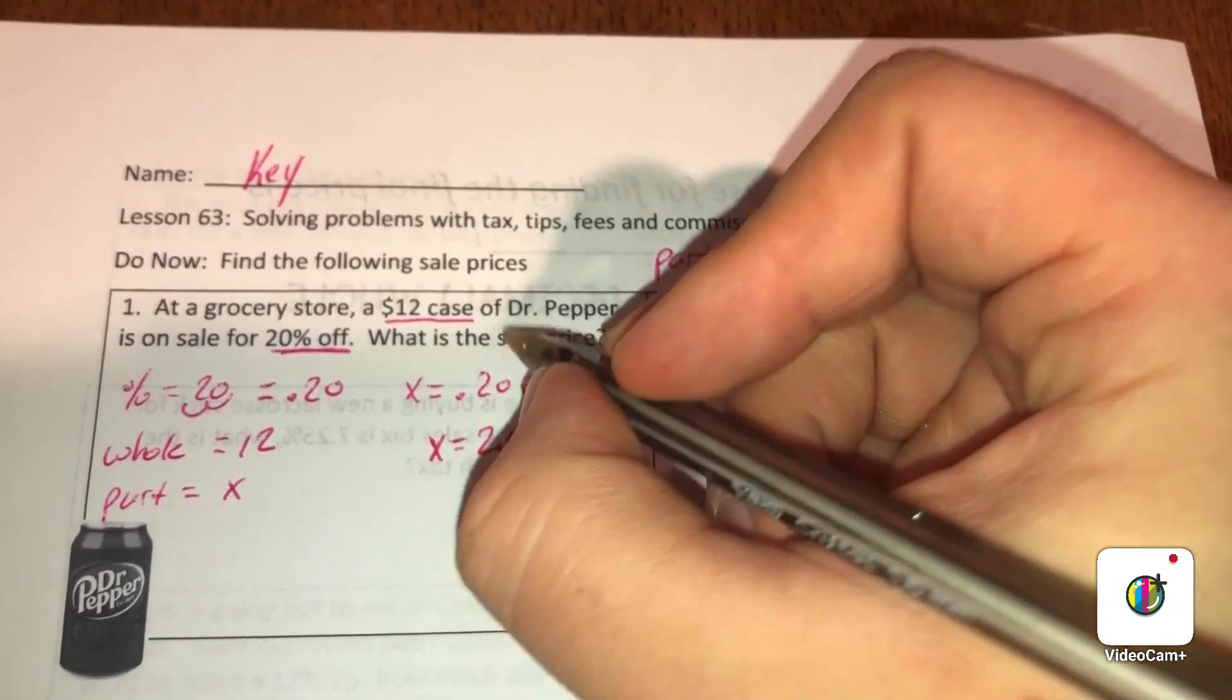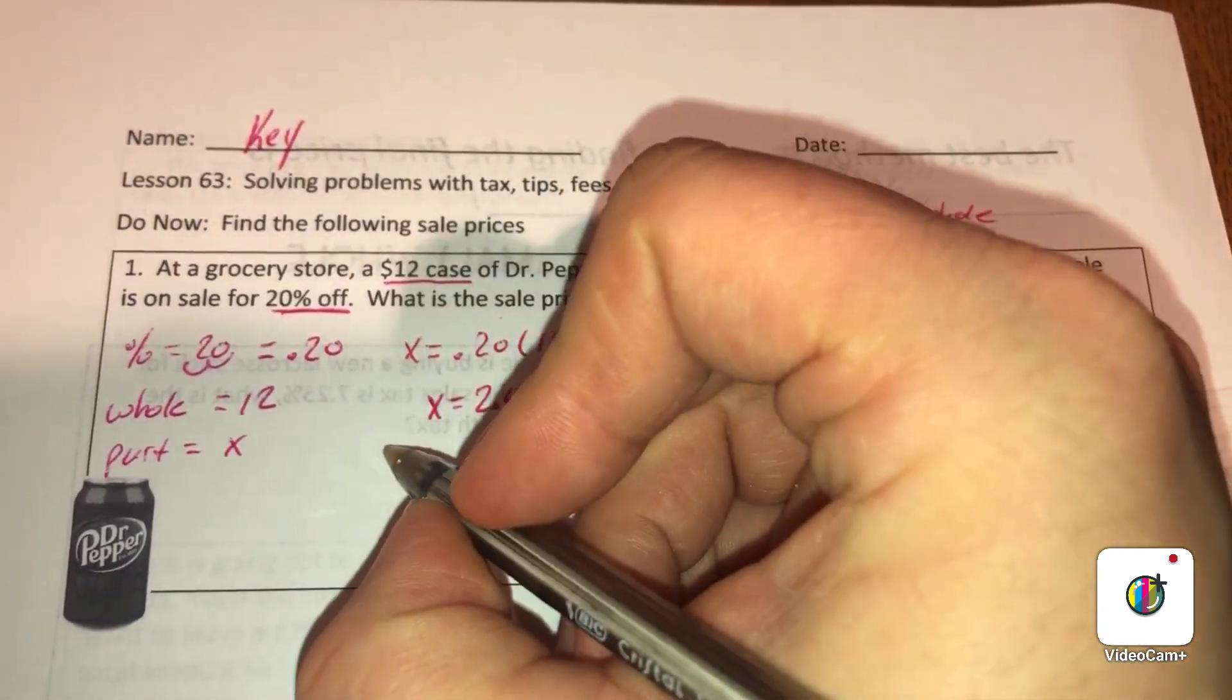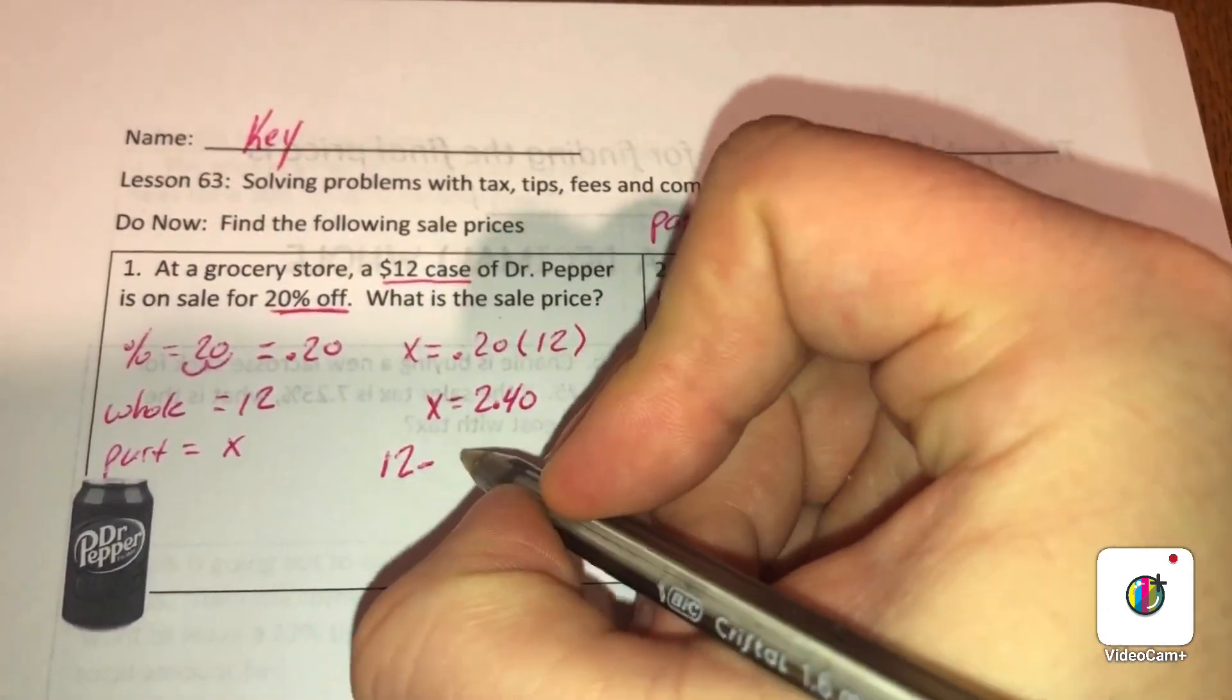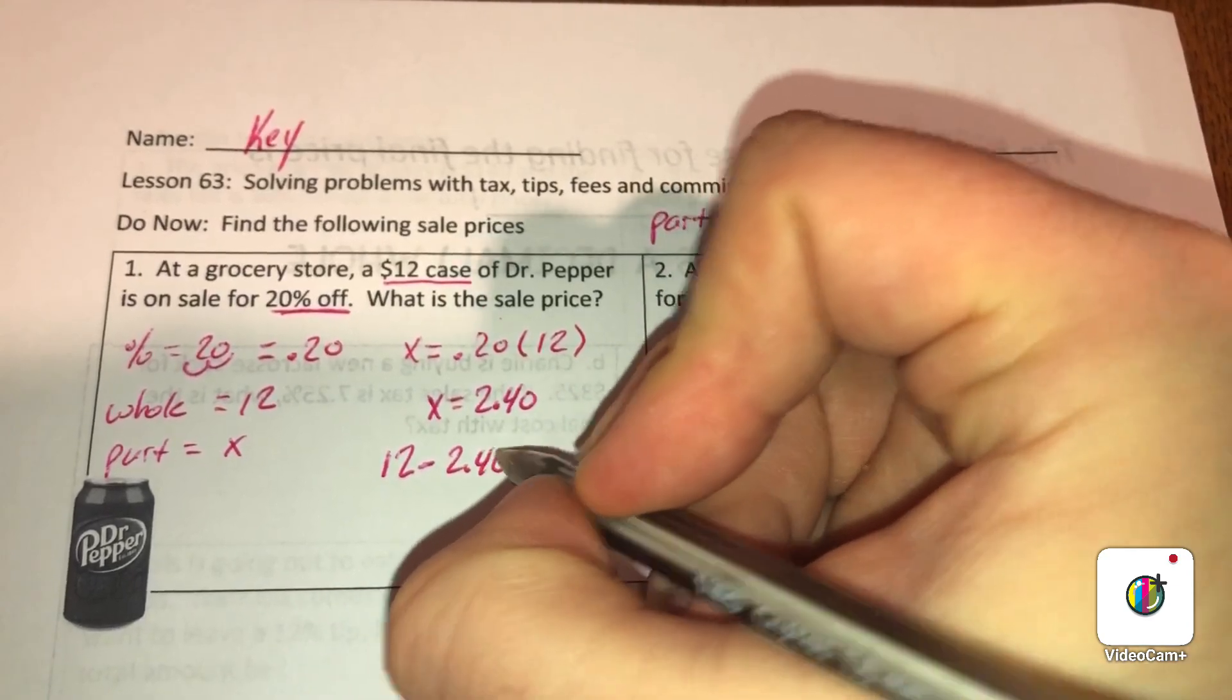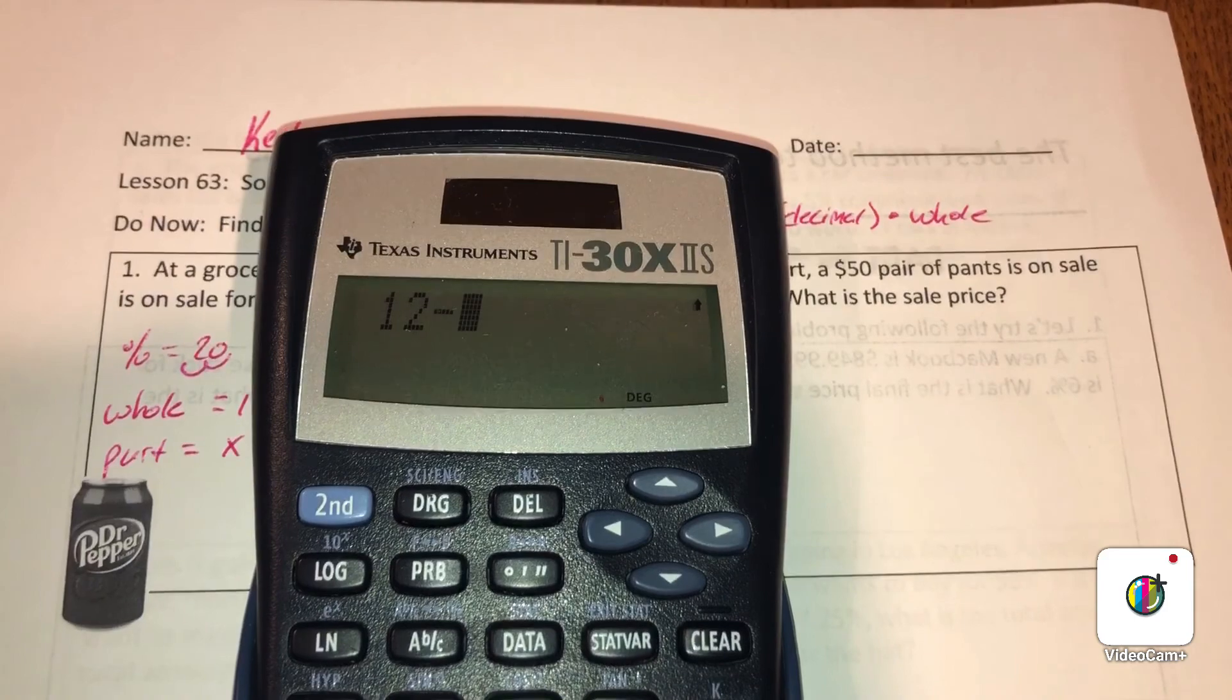Now we're looking for the sale price, so how much are we going to pay? It's the whole amount minus the part amount, which will give us our sale price. So 12 minus 2.40 is $9.60.